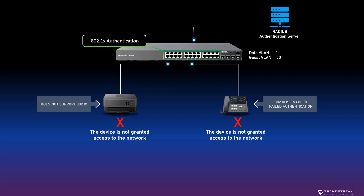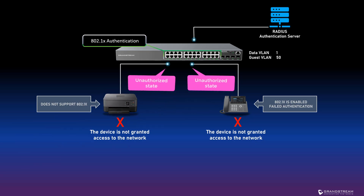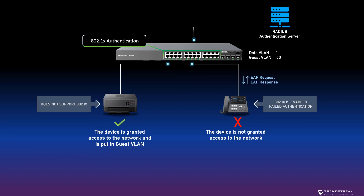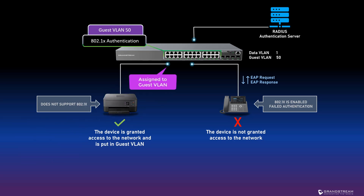With identity authentication using the 802.1x method, if a device does not support 802.1x authentication or fails to authenticate, the switch port remains in the unauthorized state and the device is not granted access to the network. When you configure identity authentication with the Guest VLAN feature, devices that do not support 802.1x are put into the Guest VLAN when they connect to a switch port with identity authentication enabled.